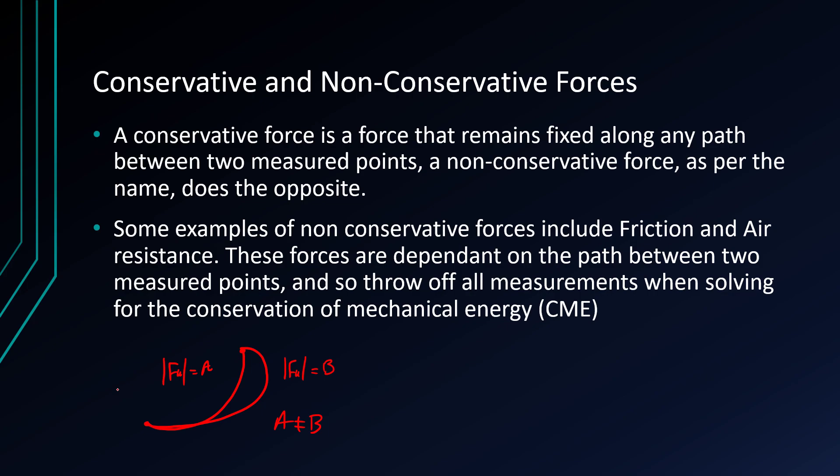Obviously, if there's a separate material from this line en route that allows the second frictional force to be less, then the work done by the frictional forces will obviously be different. However, on one simple, uniform platform with a constant coefficient of friction mu, the frictional forces will always be different if taken along two separate paths.